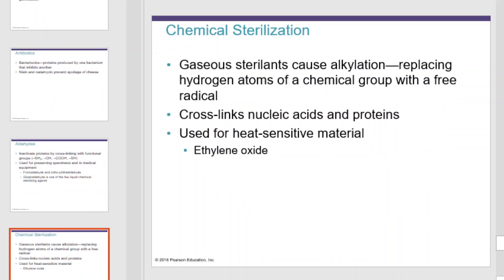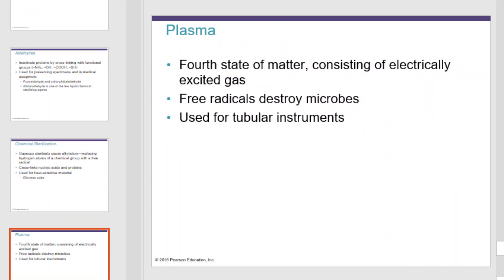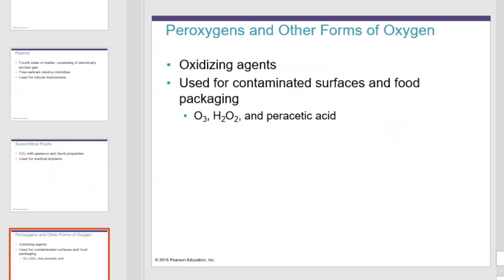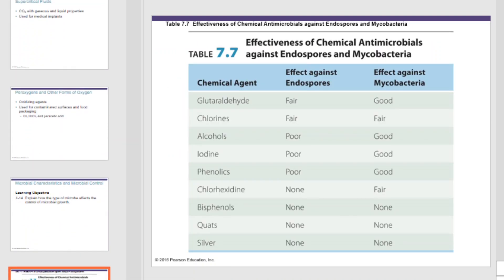Chemical sterilants include gaseous sterilants, which cause alkylation — replacing hydrogen atoms of a chemical group with a free radical — cross-linking nucleic acids and proteins. They can be used for heat-sensitive materials; ethylene oxide is a good example. Plasma, a forced state of matter consisting of electrically excited gas, is used to sterilize tubular instruments because its free radicals destroy microbes. Supercritical fluids, such as carbon dioxide with both gaseous and liquid properties, are used for medical implants. Perioxygens and other forms of oxygen are good oxidizing agents used for contaminated surfaces and food packaging. This concludes this lecture on microbial growth control.